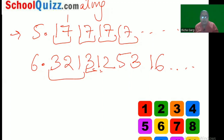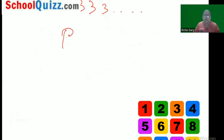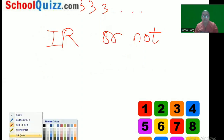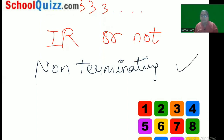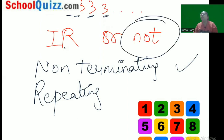From what we have learned so far, a number should be both non-terminating and non-repeating to be irrational. A simple question: is 3.3333... an irrational number? The number is non-terminating — yes. But is it non-repeating? No, because 3 is repeating itself again and again. So 3.3333... is not an irrational number; it is a rational number.